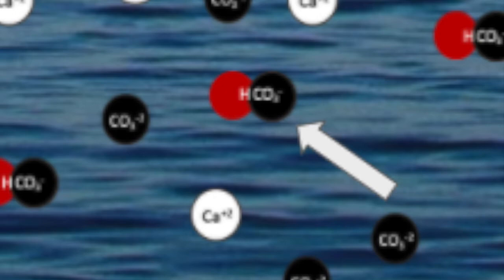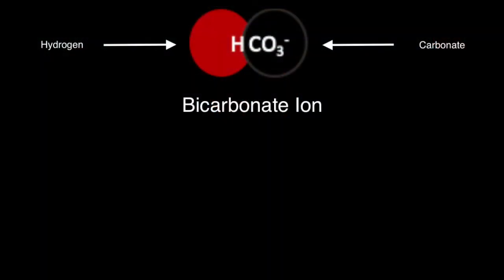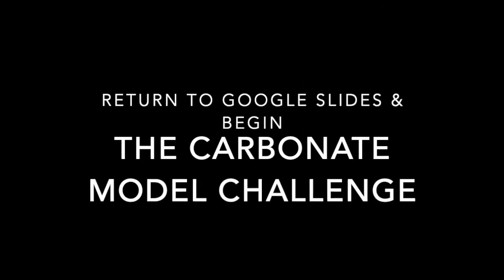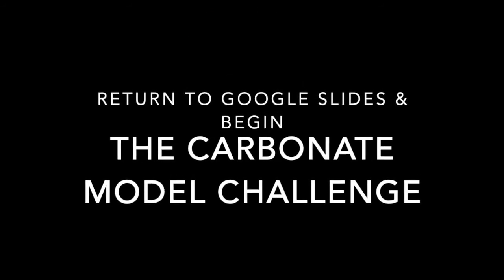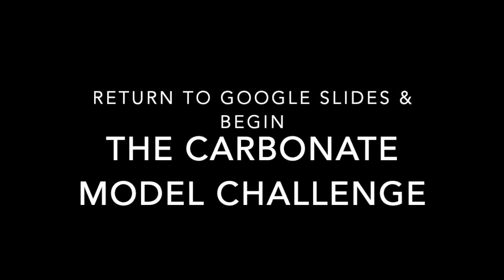That molecule is represented by a red circle, which represents a hydrogen ion, and a black circle, which represents a carbonate ion. When they're combined, it's called a bicarbonate ion. If the carbonate ion is attached to a hydrogen ion, that means the carbonate ion is no longer available to the oyster larva for shell building. You can now return to the Google Slides and begin the carbonate model challenge.